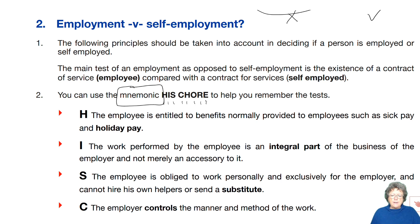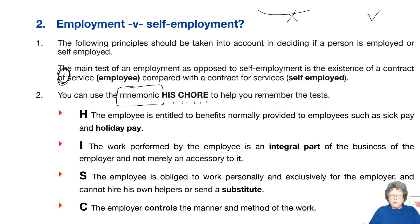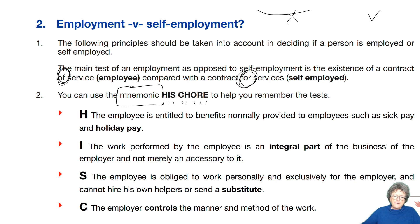If you are in employment, it's a contract of services. And if you are self-employed, it's a contract for services. These are the sort of things you might get tested on in a multiple choice question; there's never going to be a big question around it.